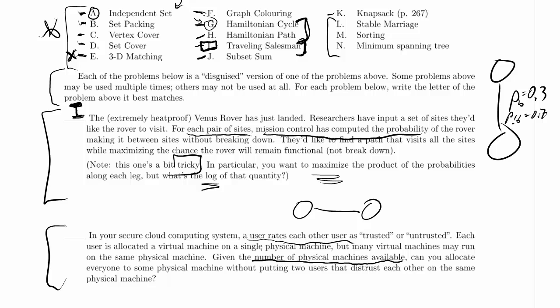Oh yeah, there we go. So we want to allocate everyone to some physical machine, and we've got a limit on the number of physical machines available. That sounds like the K in some problem with a threshold of some sort. So for each of the users, we want to give them a machine. So we're assigning a machine to each user, and we have a big set of choices of machines.